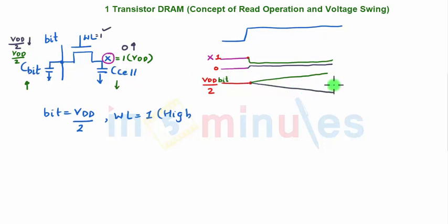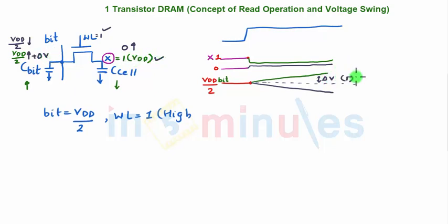If X was 0, the bit line goes down by a small value from VDD/2. If X was 1, the bit line goes up by delta V above VDD/2. So relative to the VDD/2 dotted reference line: reading a 1 causes the bit line to go up by delta V, and reading a 0 causes the bit line to go down by delta V.